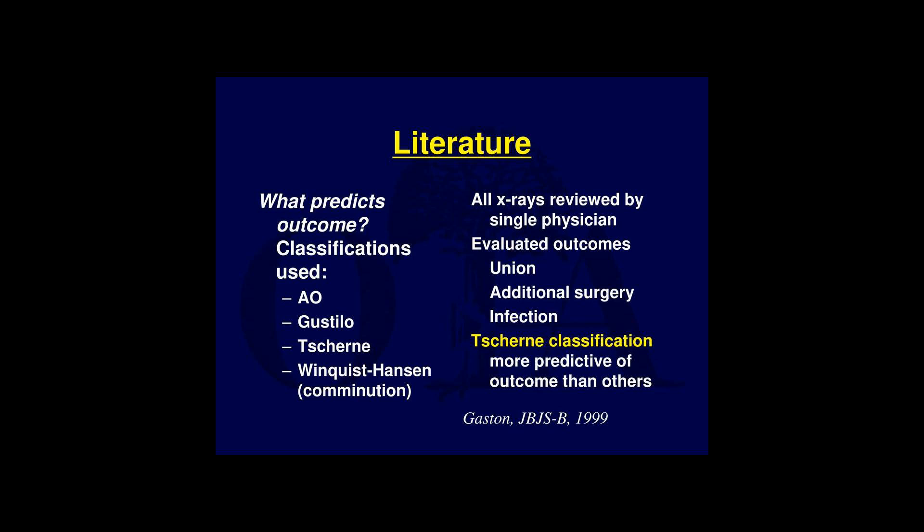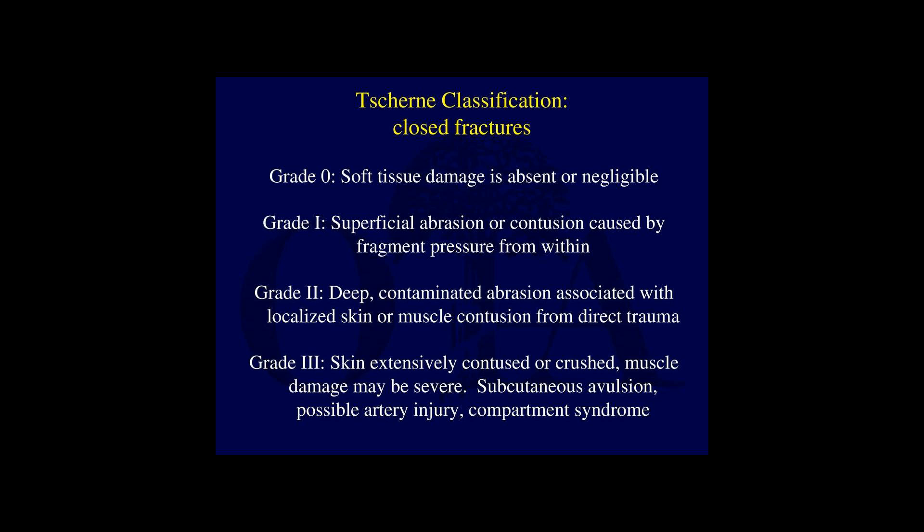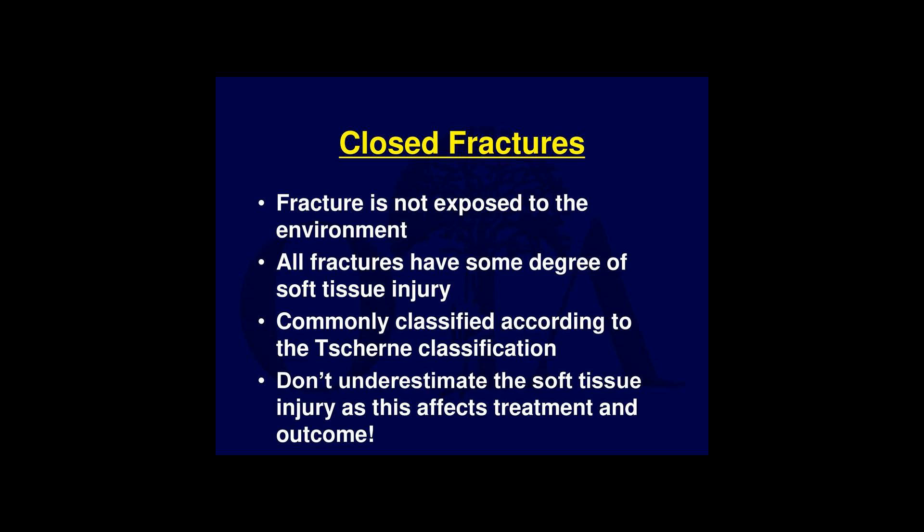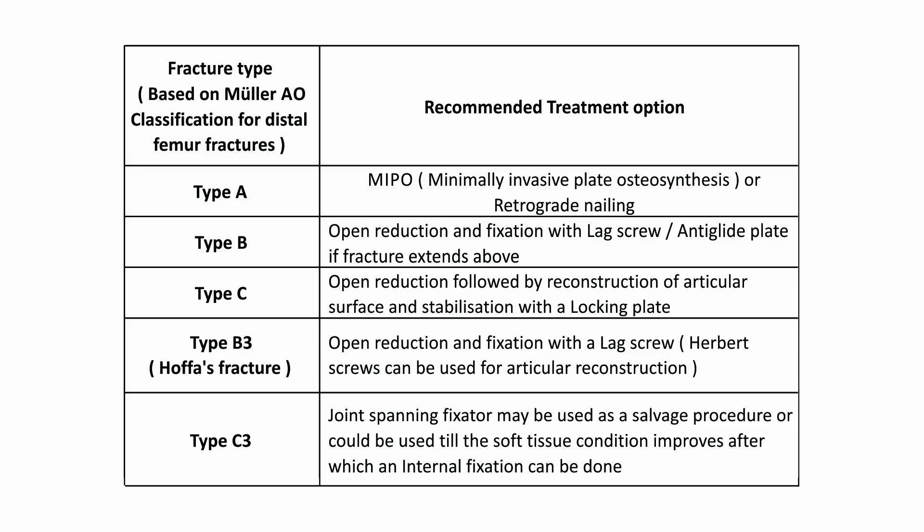Reliability. The intra-observer agreement for CHERN classification — observations at two different times by the same person — is 85%, while the inter-observer agreement is 65%.